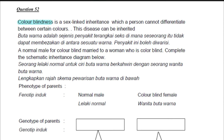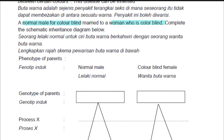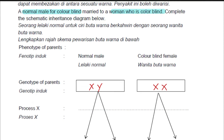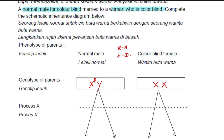The question says: a normal male marries a woman who is colorblind. No matter what the male or female traits are, first write down X, Y for male and X, X for female. For colorblindness, we use capital B for normal and small b for disease. So for the normal male, his genotype is X^B Y. For the colorblind female, both X chromosomes carry the recessive allele, so her genotype is X^b X^b.